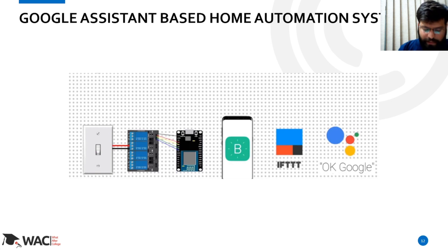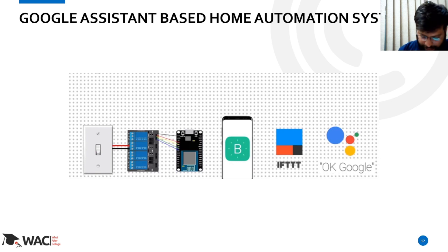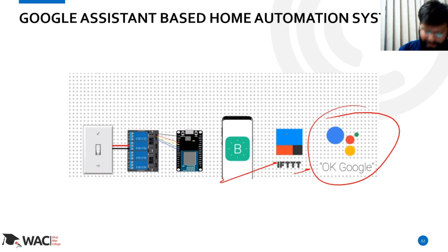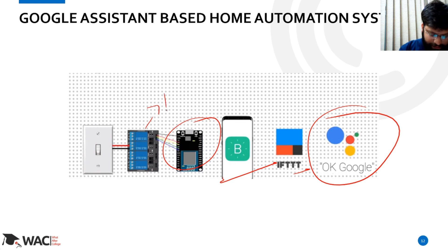The Google Assistant-based home automation system uses IFTTT, Blynk, Google Assistant, and a NodeMCU. These are the relays.